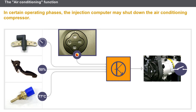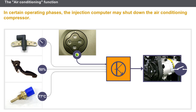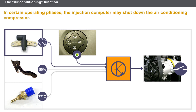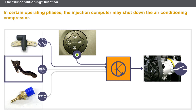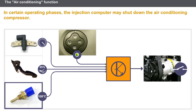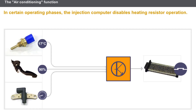The injection computer receives a cold air production request from the air conditioning computer and authorizes activation of the air conditioning compressor. The injection computer can shut down the air conditioning compressor under the following conditions: a high engine speed, a power request in the form of the full load signal, or an excessive engine temperature. There is also a program for the air conditioning system heating resistors; in certain operating phases, the injection computer disables heating resistor operation.